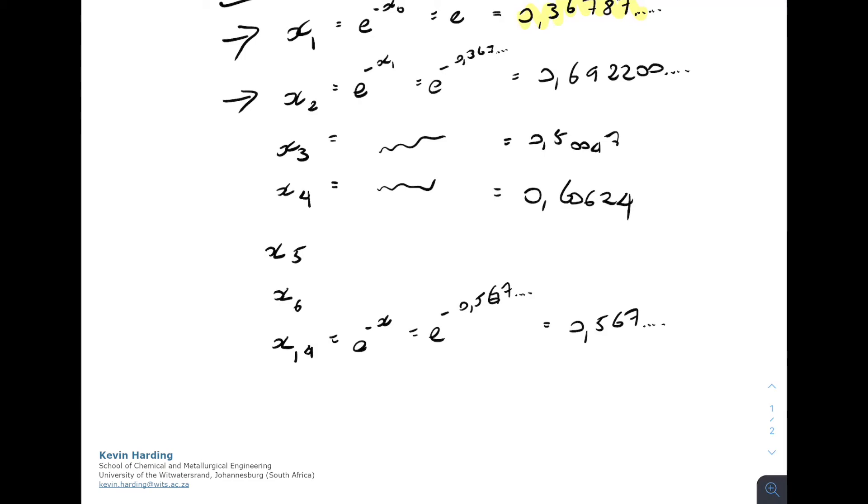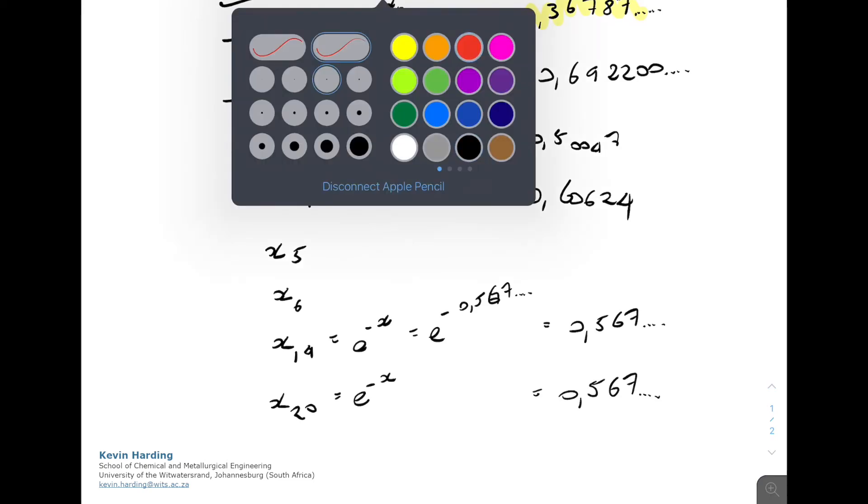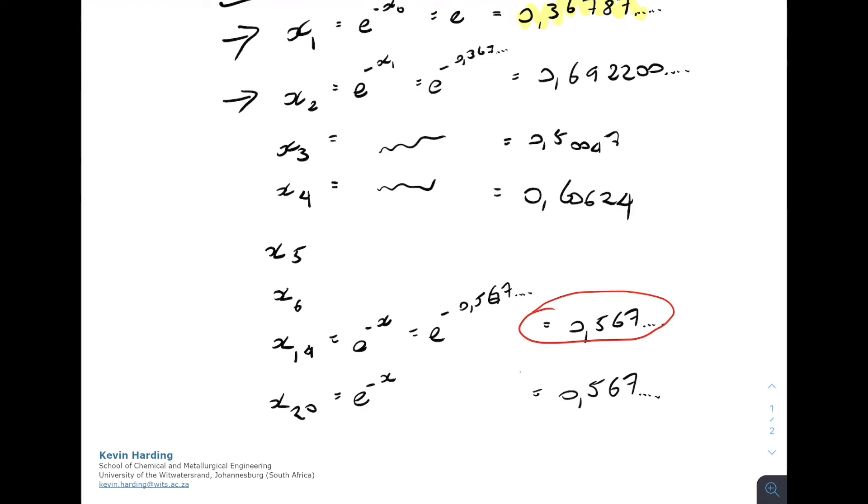So we start seeing that on x20, I do the same thing, e to the minus x of 0.567. The answer I get is again 0.567, and the decimal places actually start to match up. So when we get to a point where we now have the x values staying constant, what that means is that the left-hand side that we're assuming is equal to the right-hand side that we're calculating. So therefore, that is now becoming our final answer.